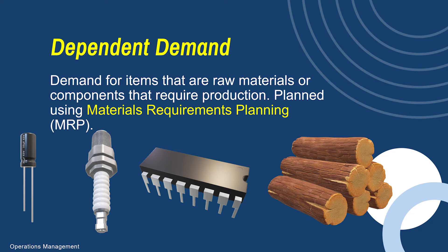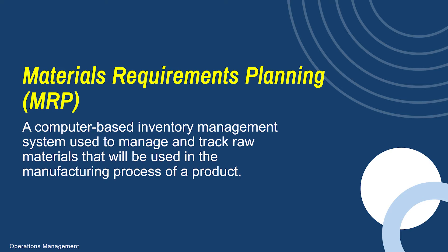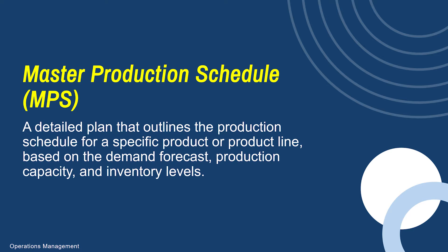And then you have dependent demand. These are items that are not finished goods — they're raw material that will be used in some aspect of production to produce a finished good eventually. When it comes to dependent demand items that depend on another item to become finished goods, you use material requirements planning or an MRP system to manage those products. For independent demand items — those finished goods — you use your master production schedule.